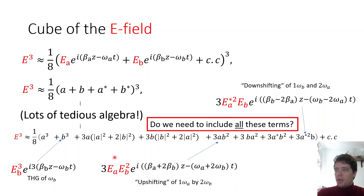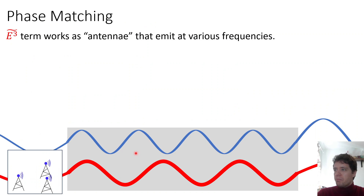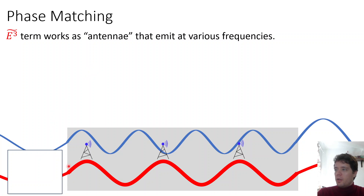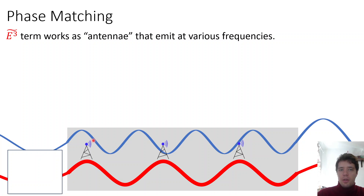You might wonder whether we need to include all of these terms when plugging into the master equation. The answer is no, and the underlying reason is phase matching, which I explained extensively in the previous video. A nonlinear medium can be thought of as a large number of small antennae that emit light depending on the cube of the local E field. If a frequency omega 1 propagates through the medium, it excites these antennae, which then emit light at three times that frequency.